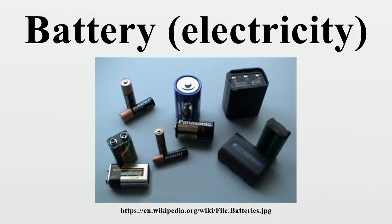The rated capacity of a battery is usually expressed as the product of 20 hours multiplied by the current that a new battery can consistently supply for 20 hours at 68 degrees Fahrenheit, while remaining above a specified terminal voltage per cell. For example, a battery rated at 100 amp-hours can deliver 5A over a 20-hour period at room temperature.